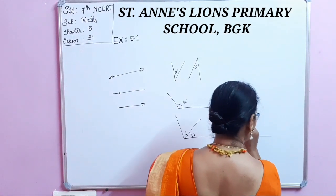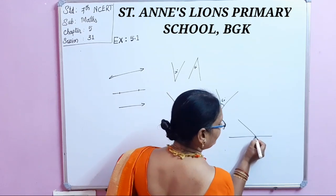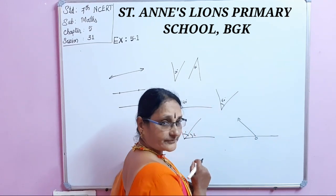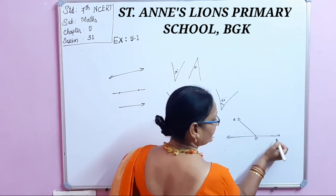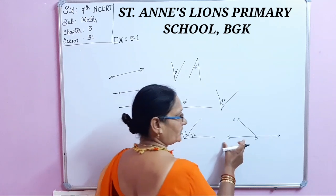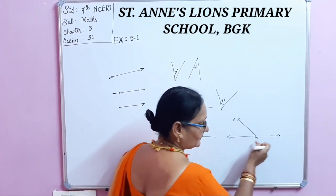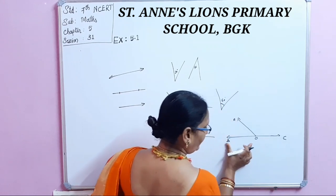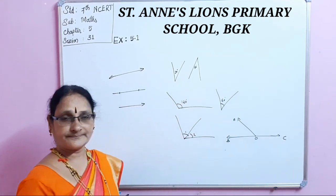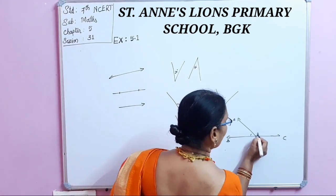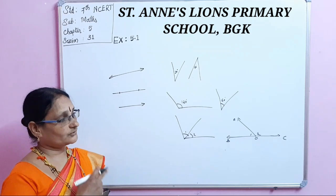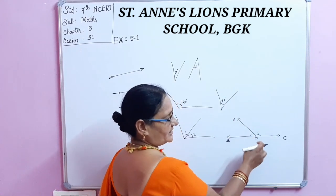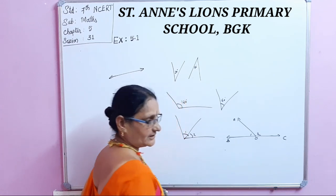Then comes linear pair. In a linear pair, they must have a common vertex — O is the common vertex, and OA is the common arm. The non-common arms OB and OC must be in the opposite direction, so that angle 1 and angle 2 are supplementary, meaning the sum of those two is 180 degrees.